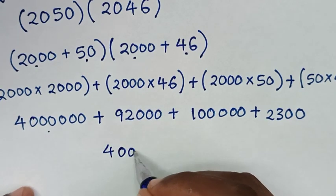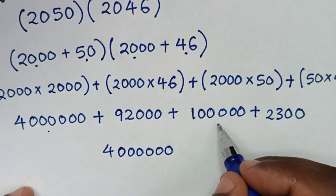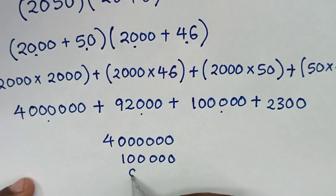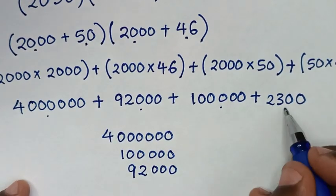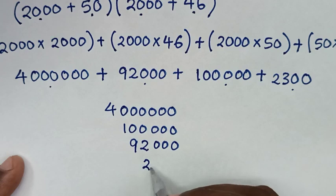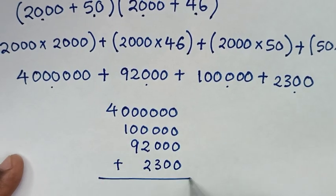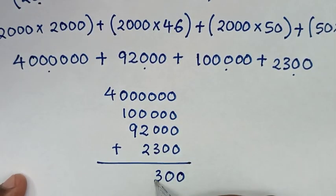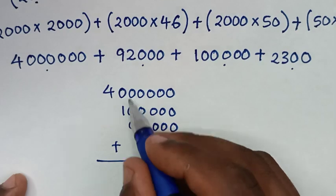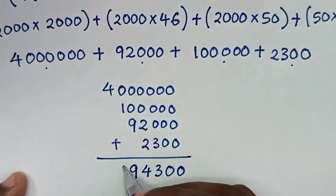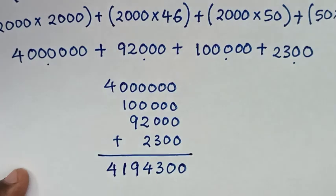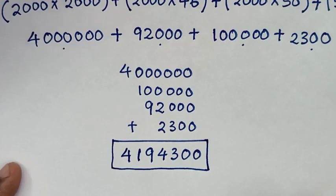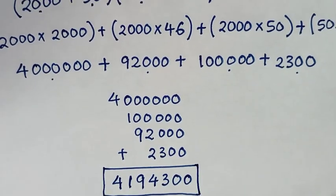Then we find the sum: 4,000,000 plus 100,000 plus 92,000 plus 2,300. Adding these together gives the final answer of 4,194,300. So this is the final answer to our problem. Thank you, and don't forget to subscribe to my channel.